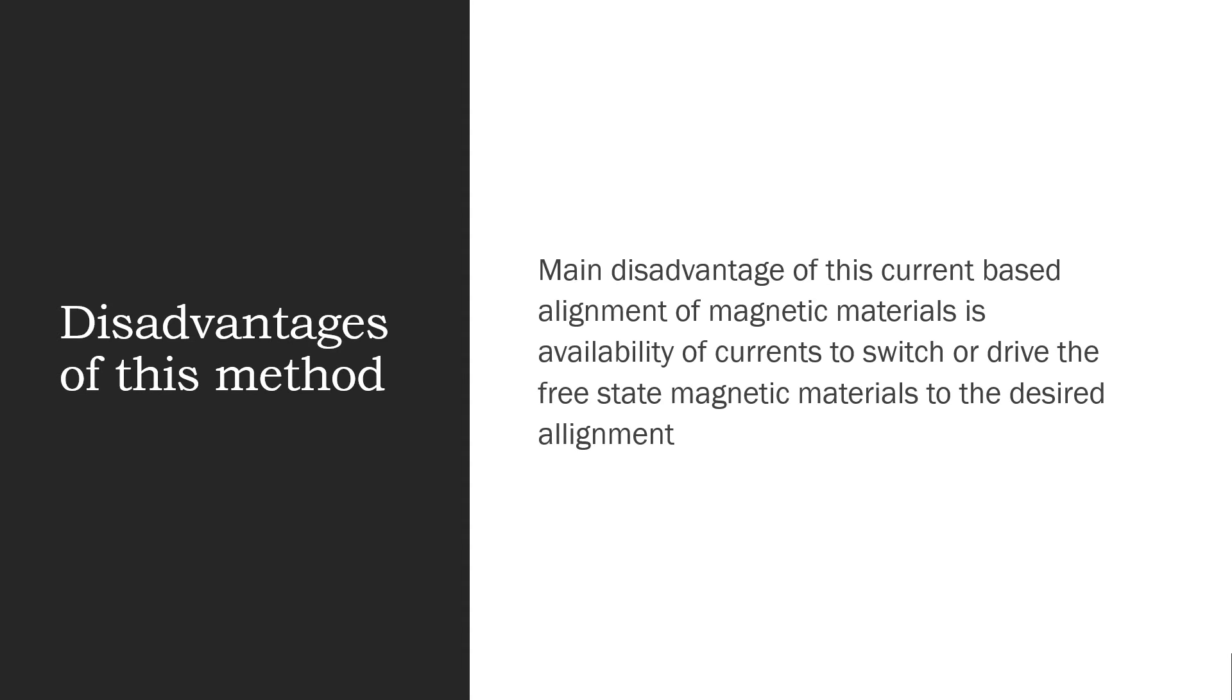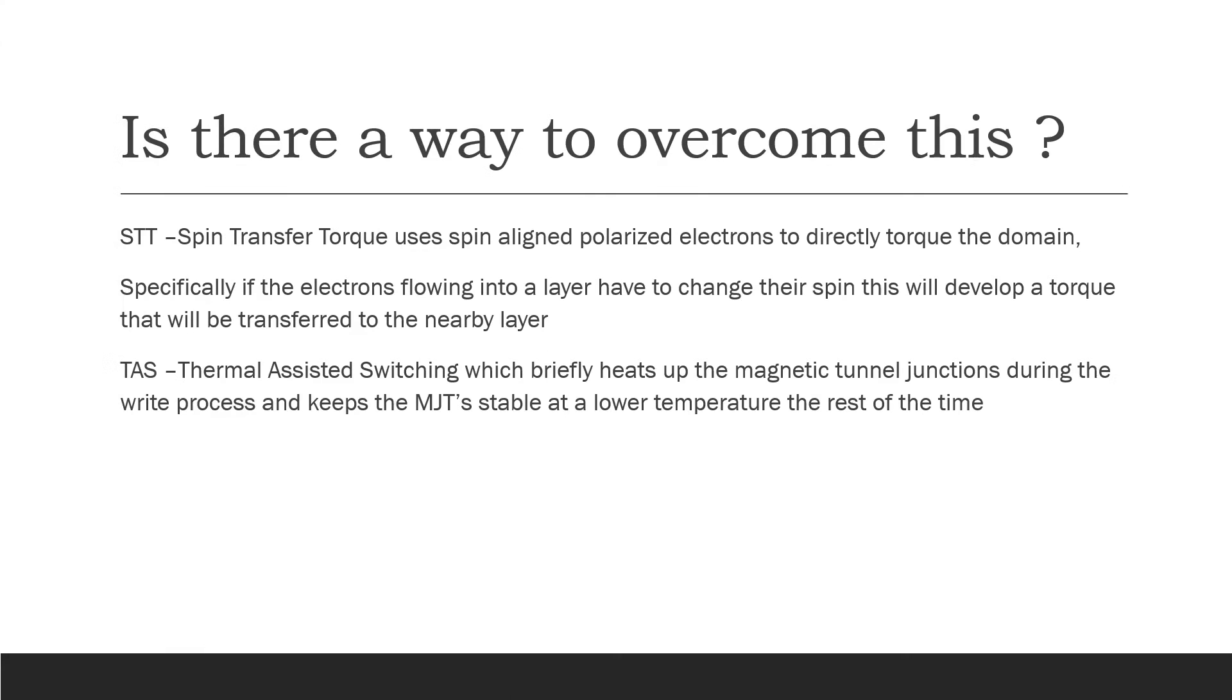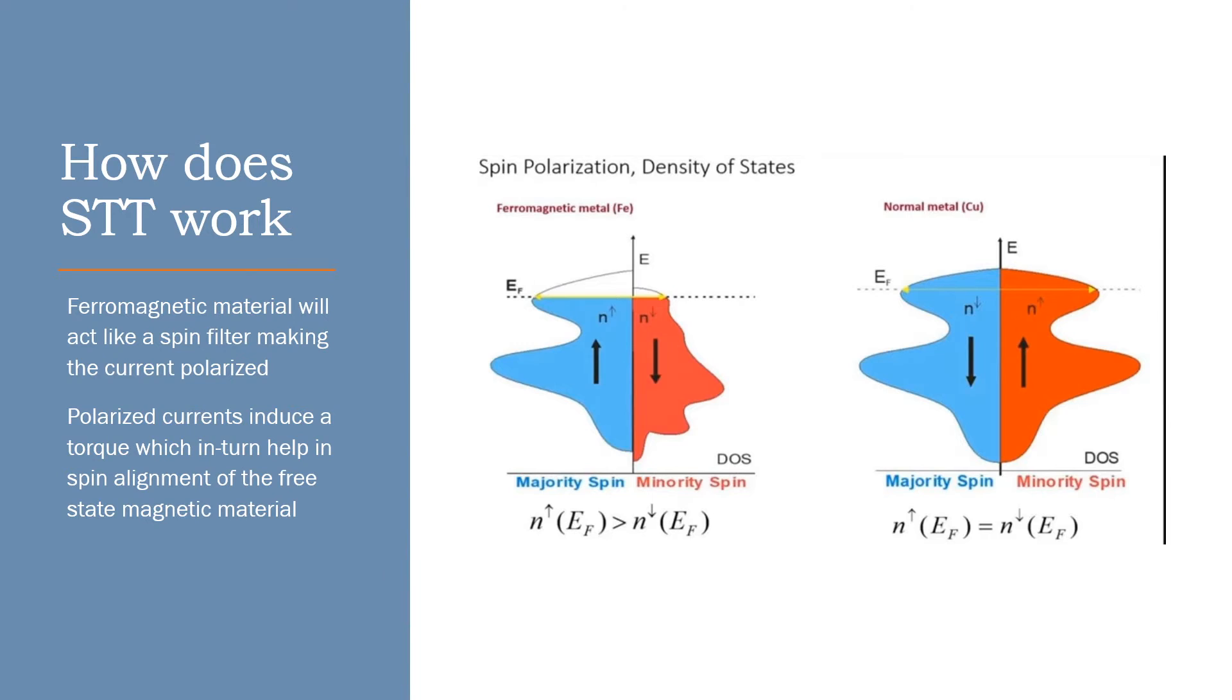And another disadvantage of this method which can be actually solved is usage of high current. So how can we solve that? We use something called as STT, Spin Transfer. And another one is TAS. TAS is not a widely used method. We generally go for STT. TAS still has R&D to be done.